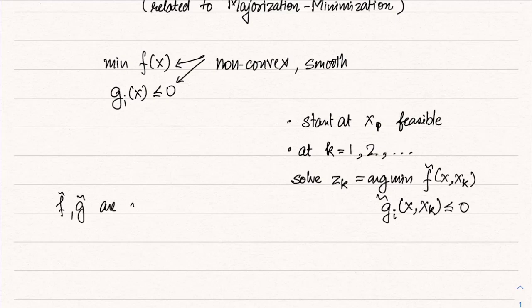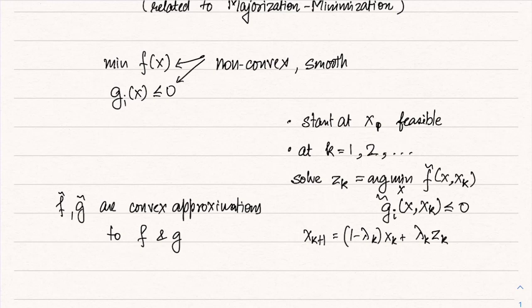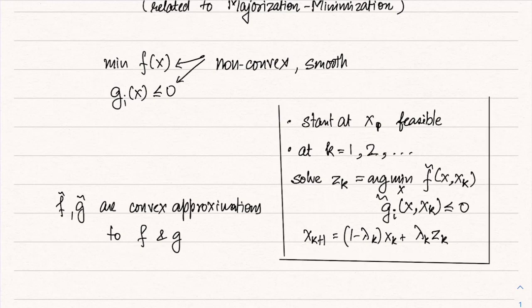f̃ and g̃ are convex approximations to f and g respectively. Since these are convex approximations, the subproblem z_k = argmin f̃ subject to g̃_i ≤ 0 can be solved using interior point methods or CVXPY. Then x_{k+1} is computed as a convex combination of the earlier iterate x_k and z_k, where λ_k is a tuning parameter.